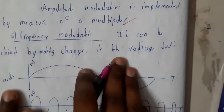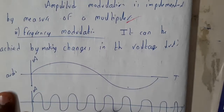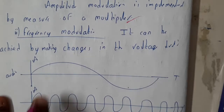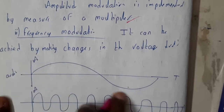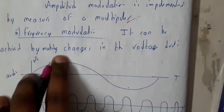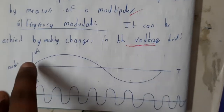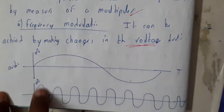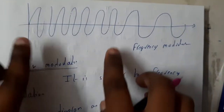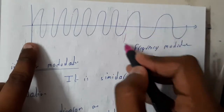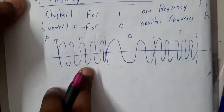Now let us go through frequency modulation. Frequency modulation is similar, but here we consider the frequency. So let us assume the audio signal. It can be achieved by making changes in the voltage — voltage changes will result in a frequency change. If we use a normal frequency it will be in this way, and after some time it will be really high, and at some part really low.